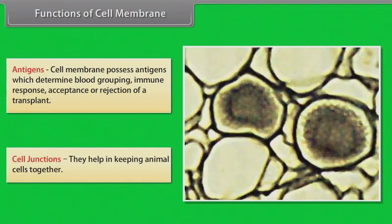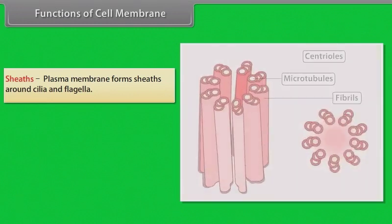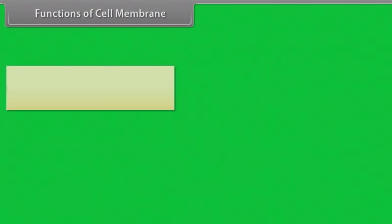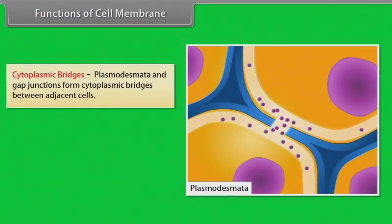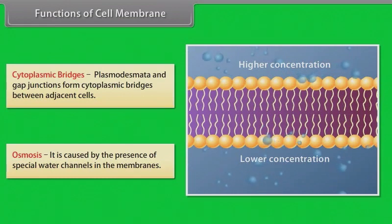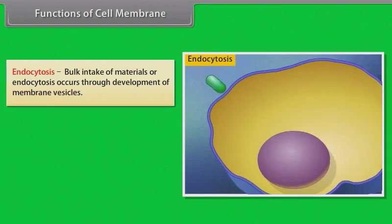Organelles — cell membranes delimit a number of subcellular structures or organelles like nucleus, mitochondria, plastids, Golgi apparatus, endoplasmic reticulum, microbodies, etc. Cell recognition — with the help of glycolipids and glycoproteins, the cell membrane is able to differentiate similar cells from dissimilar ones, and foreign substances from familiar materials. Cell recognition is useful for tissue formation and defense against microbes. Cell junctions help in keeping animal cells together. The plasma membrane forms sheets around cilia and flagella. Microvilli are membrane evaginations specialized for increasing absorption.